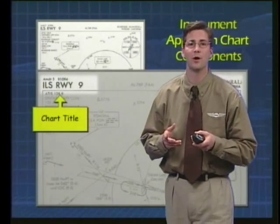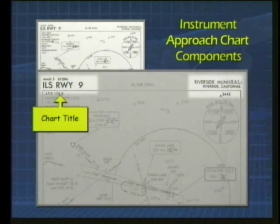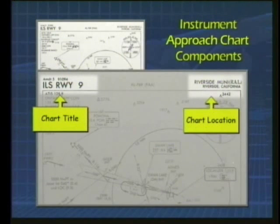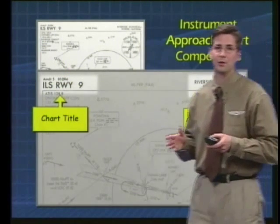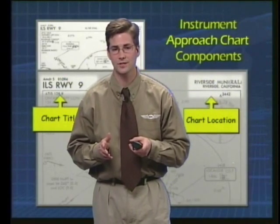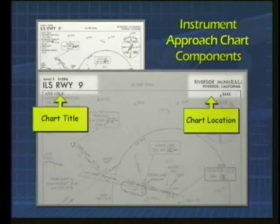When flying an instrument approach, it's also critical that you always double-check to make sure you have the correct chart out for the approach that you're flying. The location of the chart is always shown right up here at the top of the instrument approach chart. Many larger airports have more than a few approaches, and some even have multiple approaches of the same variety, such as two different ILS approaches. It's always critical to check that information before you start the approach.